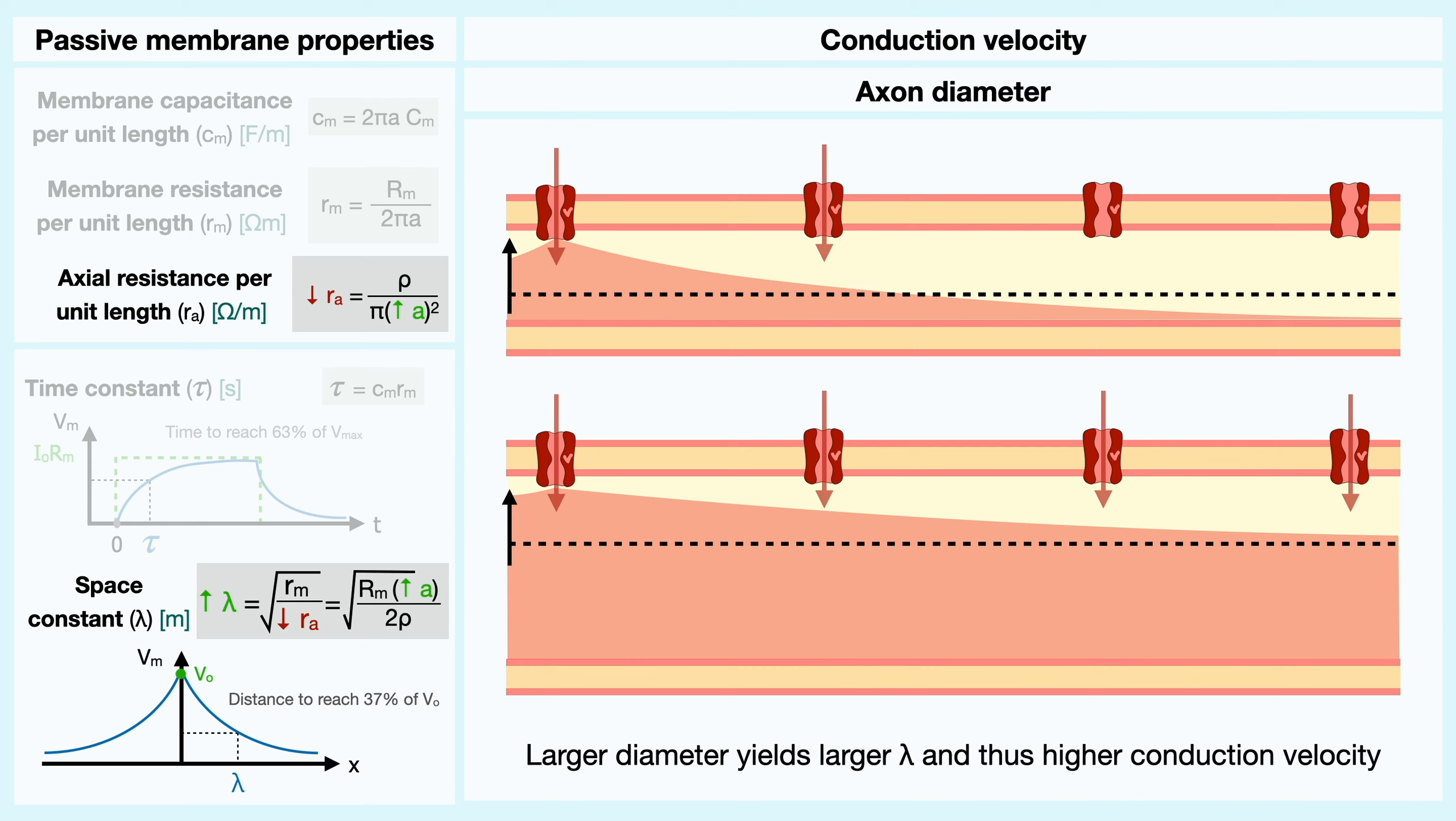Hence, neurons with large diameters have faster conduction velocity down their axon.